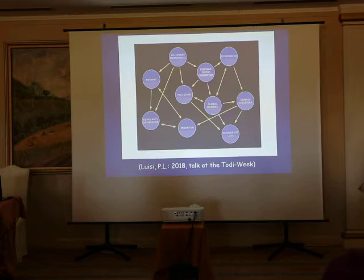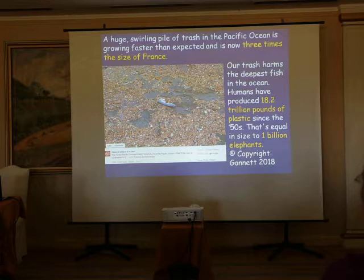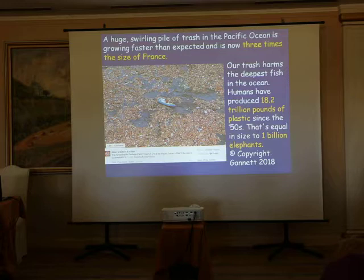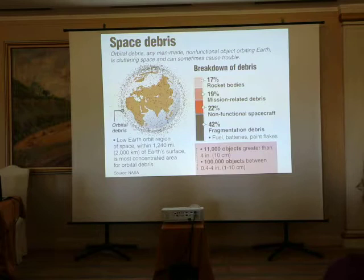Looking at our oceans: a huge swirling pile of trash in the Pacific Ocean is growing faster than expected and is now three times the size of France. Our trash harms even the deepest fish in the ocean. Humans have produced 18 trillion pounds of plastic since the 1950s — equal in size to one billion elephants. And we are so clever that we are polluting even space.